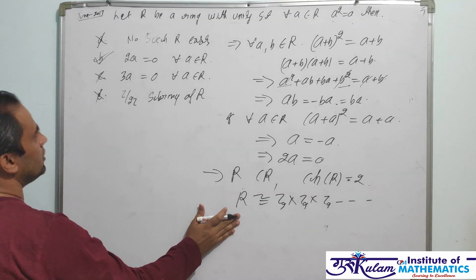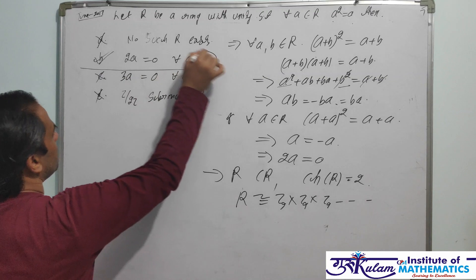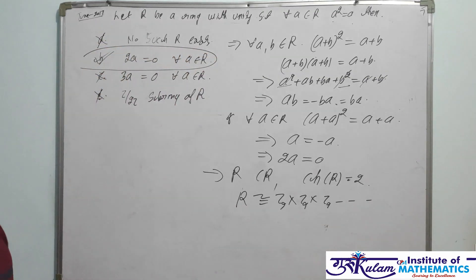Every ring with unity in which every element is idempotent is isomorphic to something like Z2 × Z2 × Z2. These are some of the properties. Based on this property, the second option must be true and all remaining options are false.